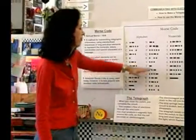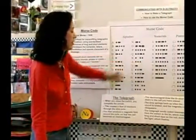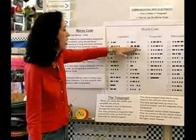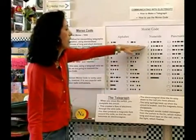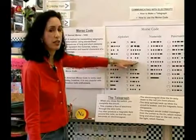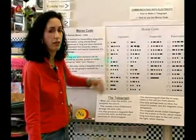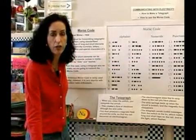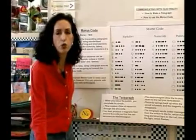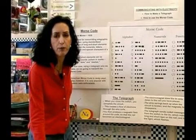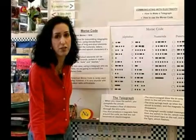For instance, dit dit dit — that's S — and then if you go to O: da, da, da, and then S again: dit dit dit. That is the same signal the Titanic tried to send to the Californian, which was 20 miles away, to get people to help them because the ship was sinking.